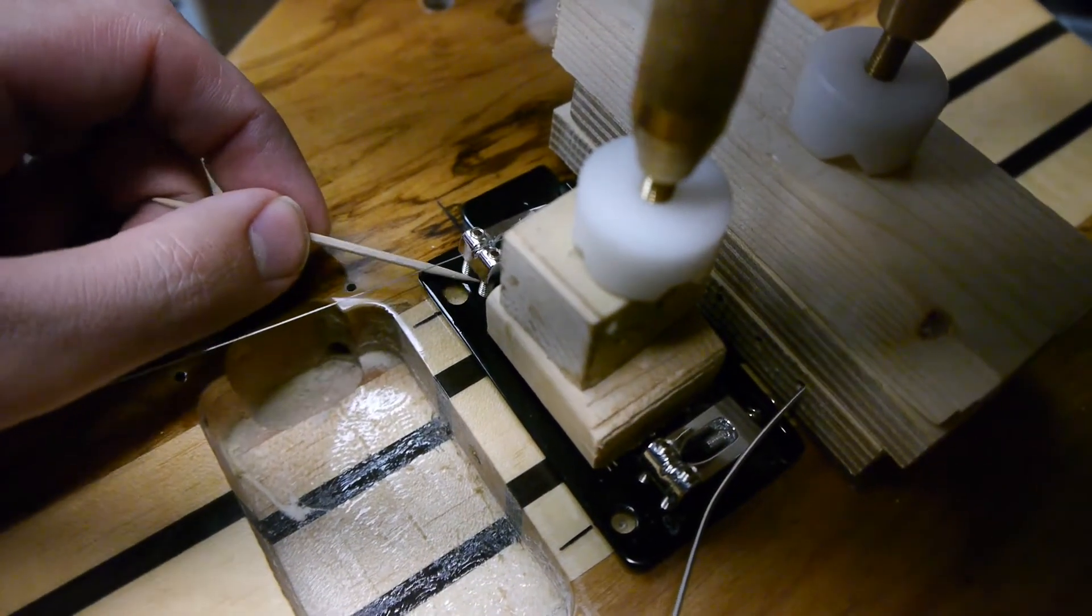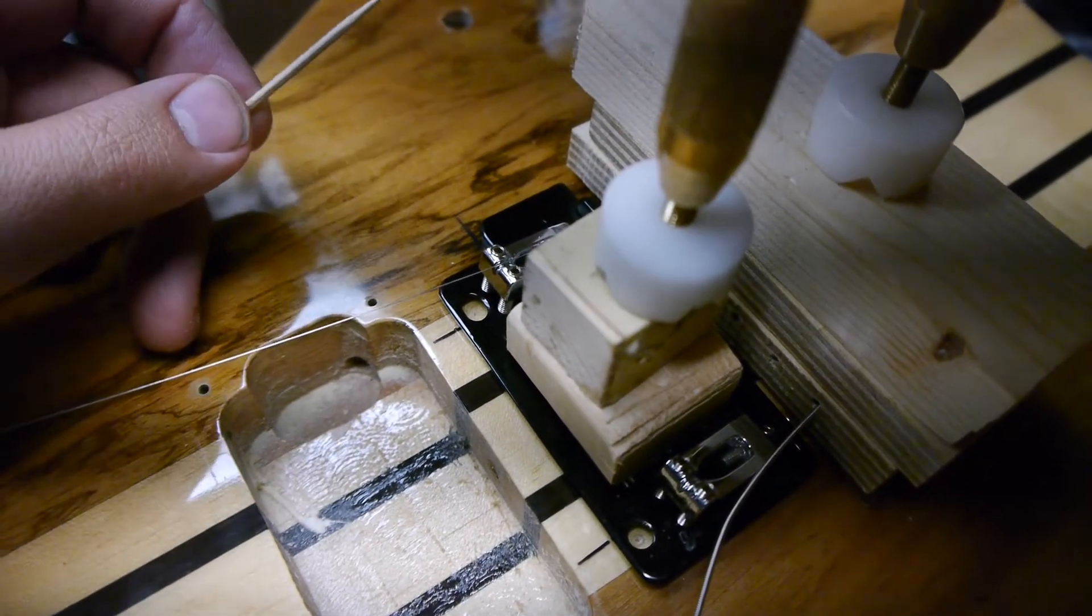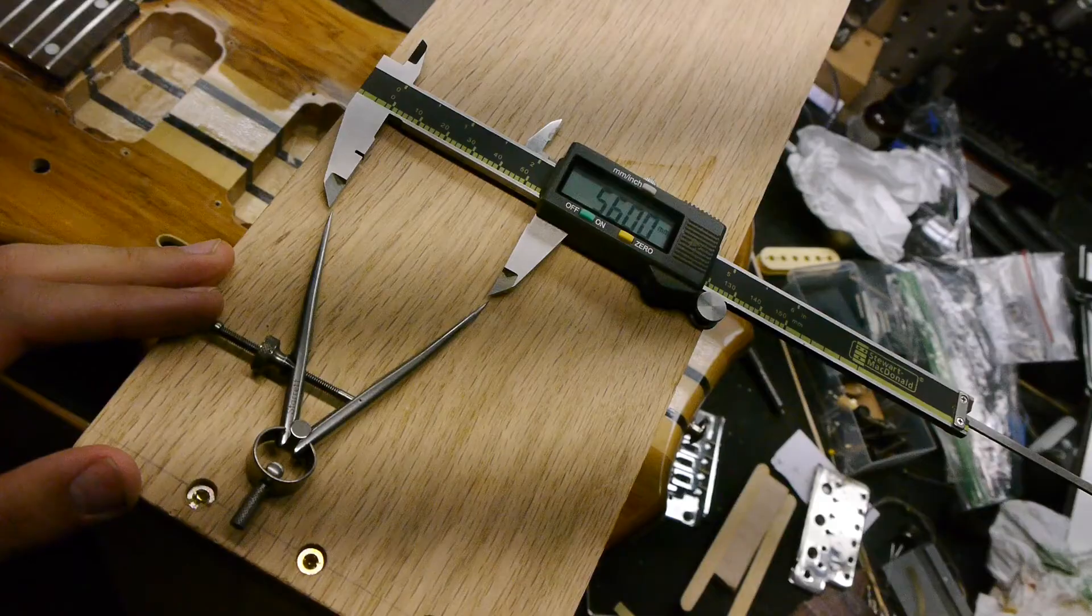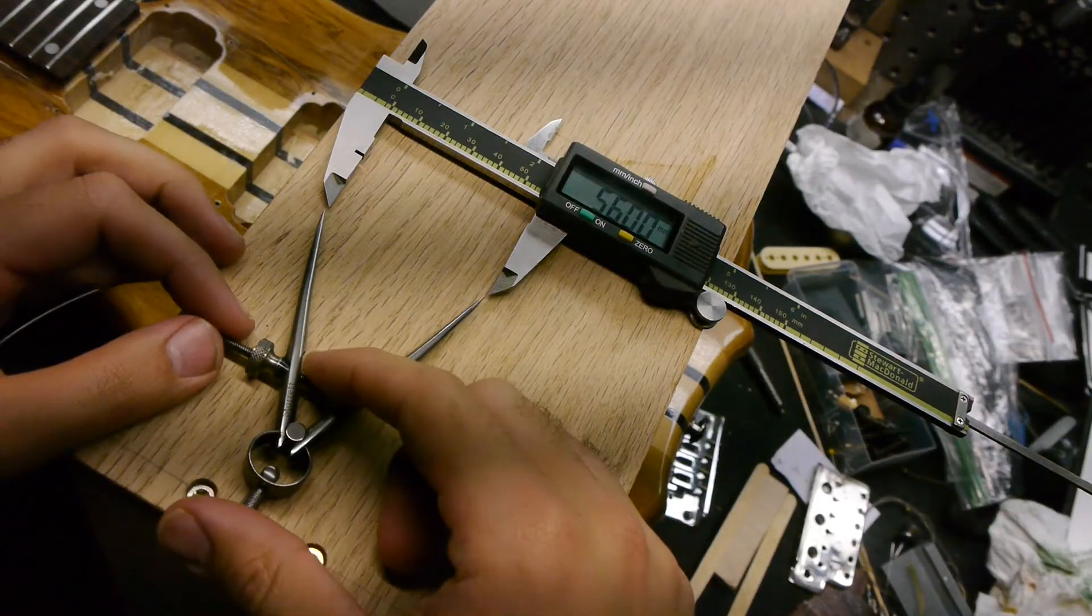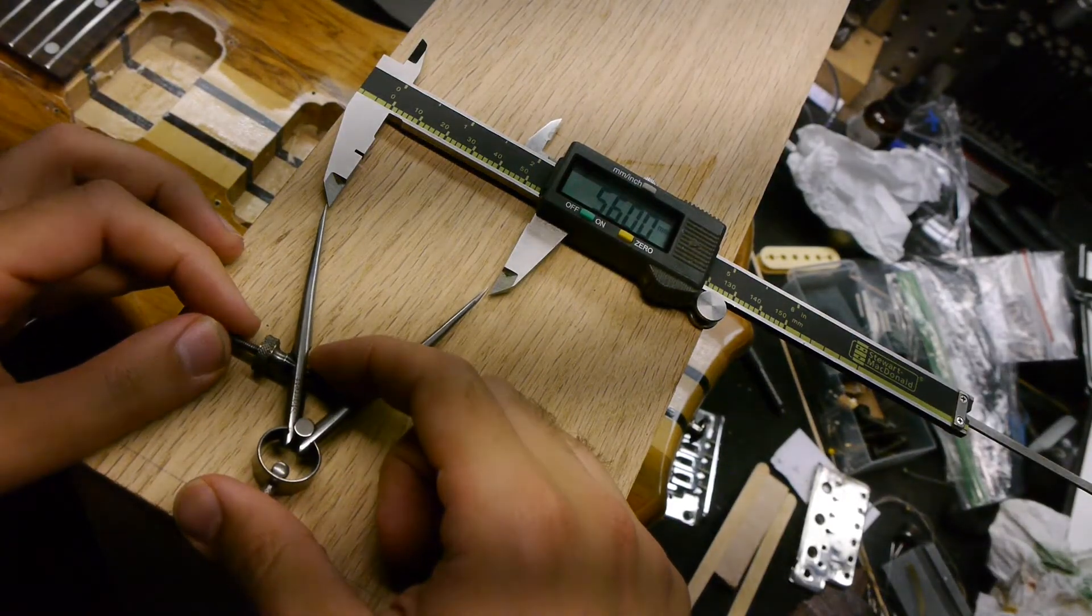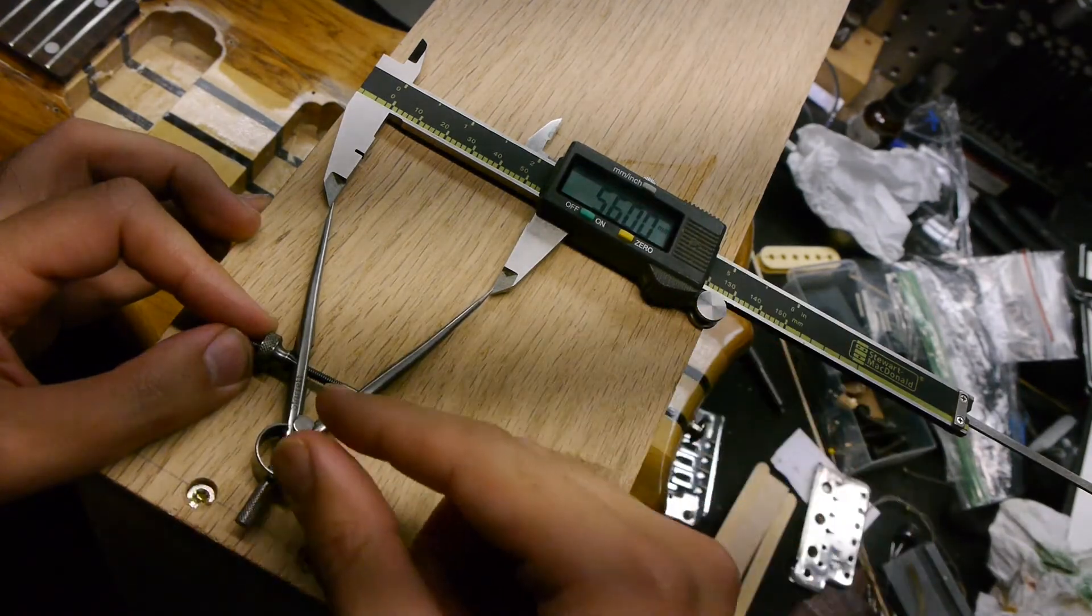And one final note. You'll see that this hole is oblong and that means I can't use a punch to find the center. So I looked up the spacing for the bridge online, which is 56mm, set my digital calipers.